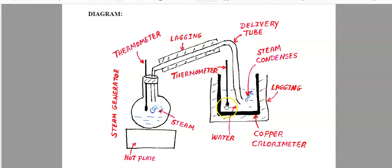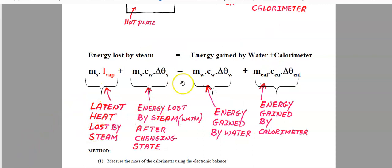It's in here that the real action takes place — energy is lost by the steam and energy is gained by the water. The steam bubbles in, it condenses, and immediately loses energy, which is gained by the water and the calorimeter. By equating the energy lost by the steam to the energy gained by the water plus the energy gained by the calorimeter, we can come up with an equation. We are assuming that no energy is absorbed by the surroundings, and we take precautions to minimize that — but we'll talk about that later.